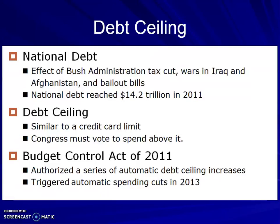In 2011, we had what was called the Budget Control Act, which authorized a series of automatic debt ceiling increases. Because of the way the budget and the act were set up, it also had automatic spending cuts that came in 2013. That's also why we've had government shutdowns, because we have to vote each time about whether we're going to raise that spending limit. It always turns into a political issue — are we going to pass it or not? It turns into a major issue where either the government does shut down or there is the threat of it shutting down. Sadly, it's actually not an uncommon thing any longer.